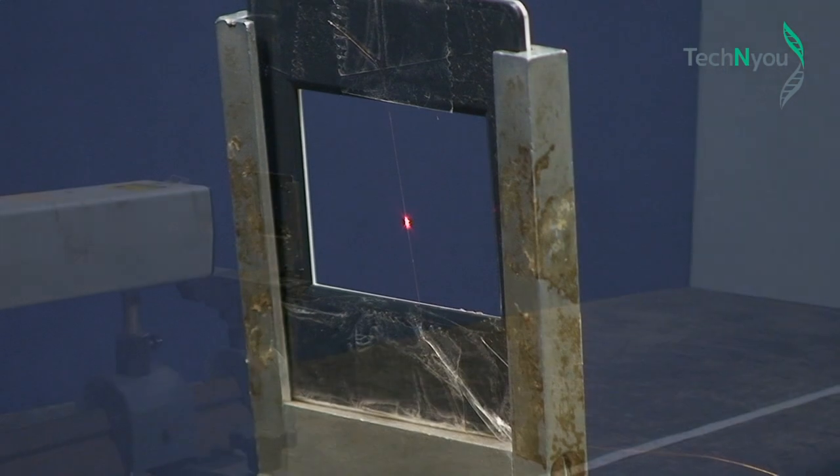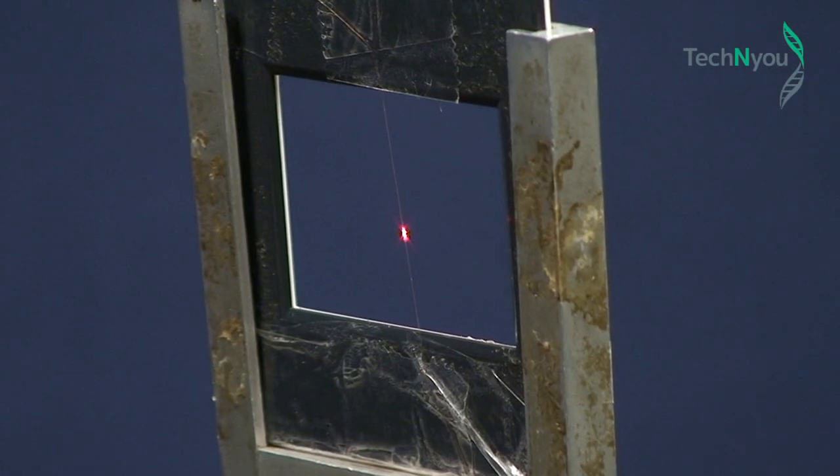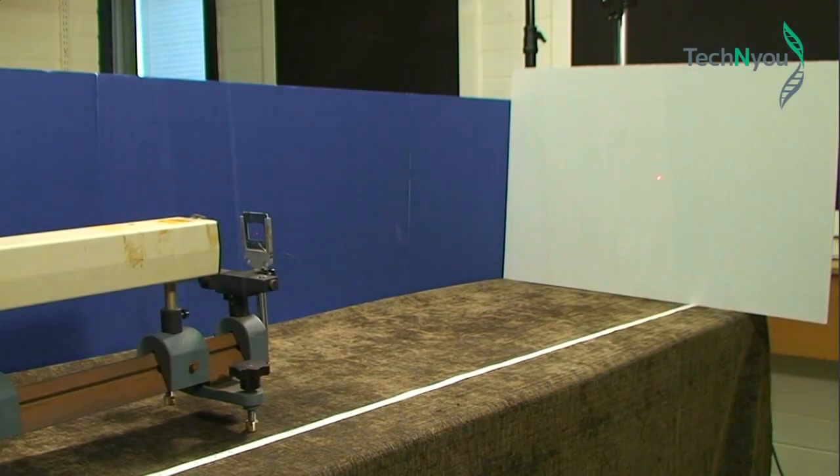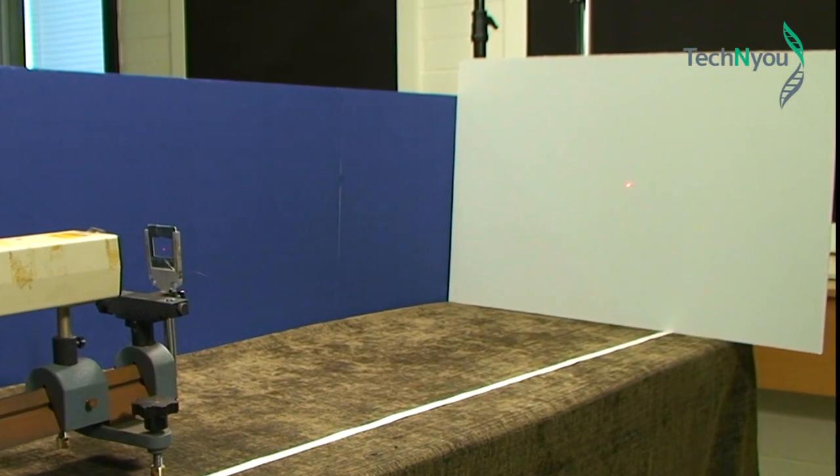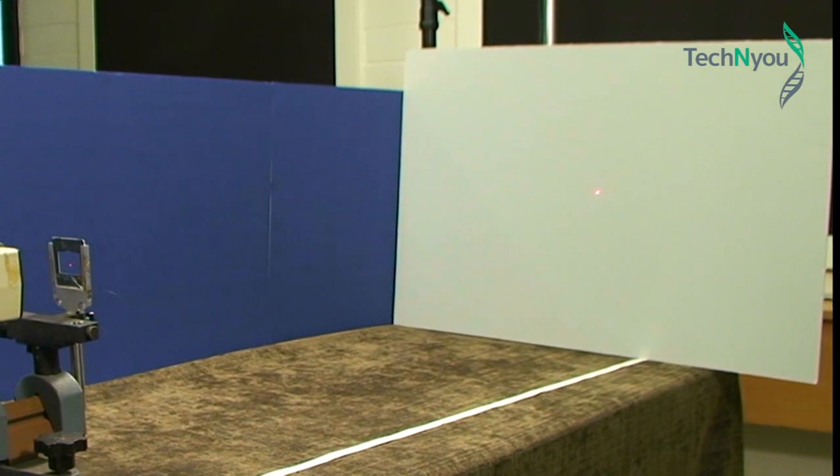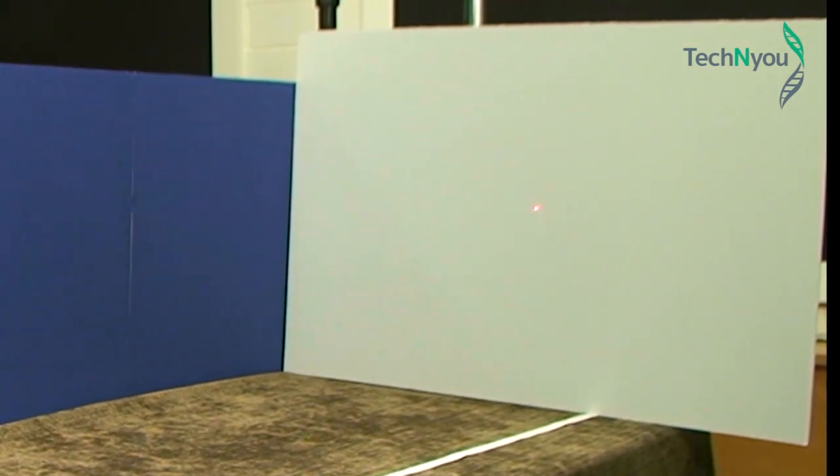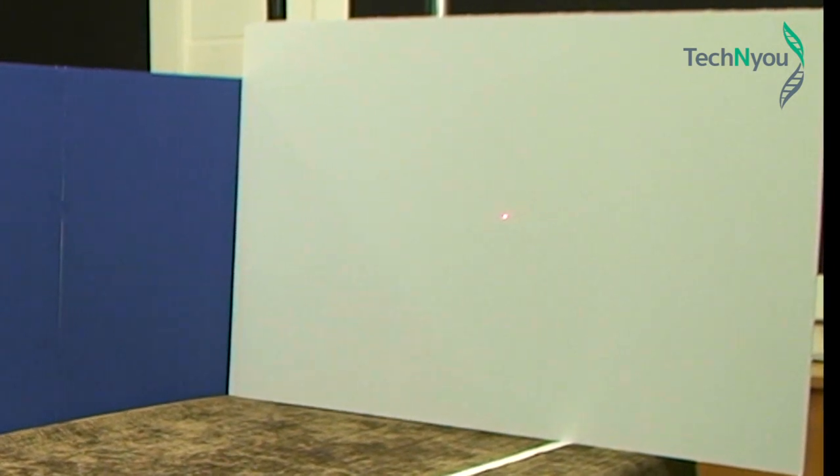We'll also need a human hair to suspend between the clamps in this slide frame using household sticky tape. We've set up a whiteboard directly in front of the laser source at least 1.2 metres from the position of the suspended hair to receive the diffracted image.